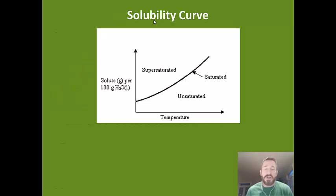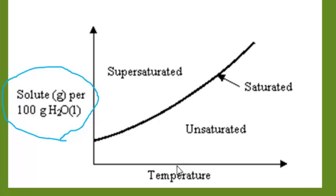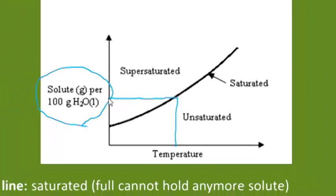Here's our solubility curve. There are three areas we want to look at. The y-axis shows grams of solute per 100 grams of water — they've measured how many grams of solute can be dissolved in 100 grams of water at each specific temperature. The line itself represents a saturated solution. At any point on the line, the solution cannot dissolve any more solute. You go straight up from a temperature to the curve, then across to the y-axis to read the grams of solute dissolvable at that temperature.